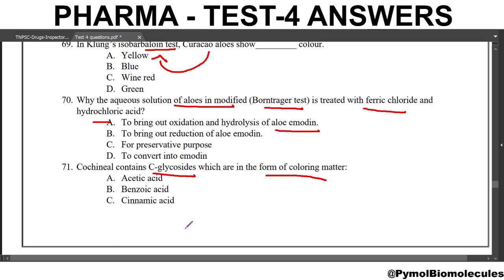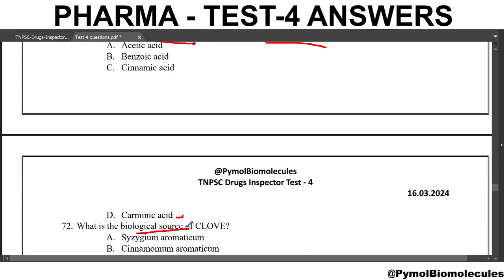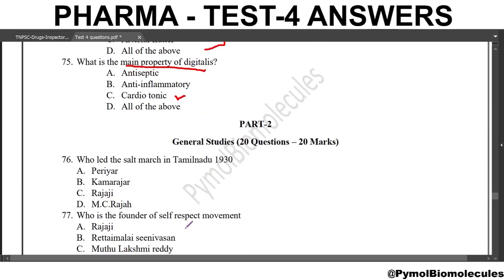Regarding question 71 on cochineal — carminic acid is a glucosidyl anthraquinone. Carminic acid gives deep red color in water and yellow to violet color in acidic solution. It is soluble in alcohol and occurs as small prismatic crystals. That completes Part 1.